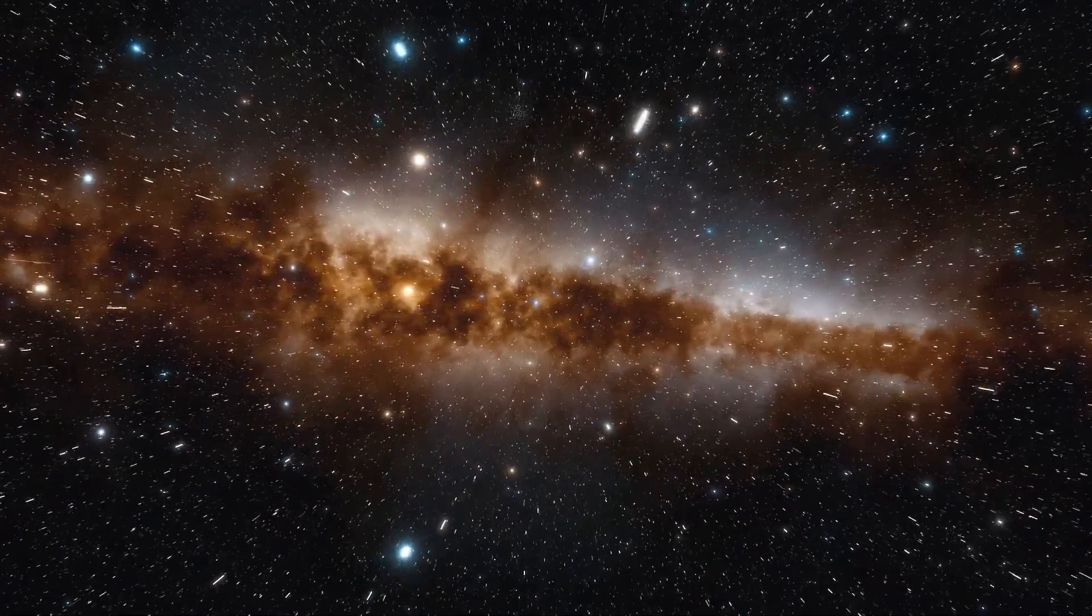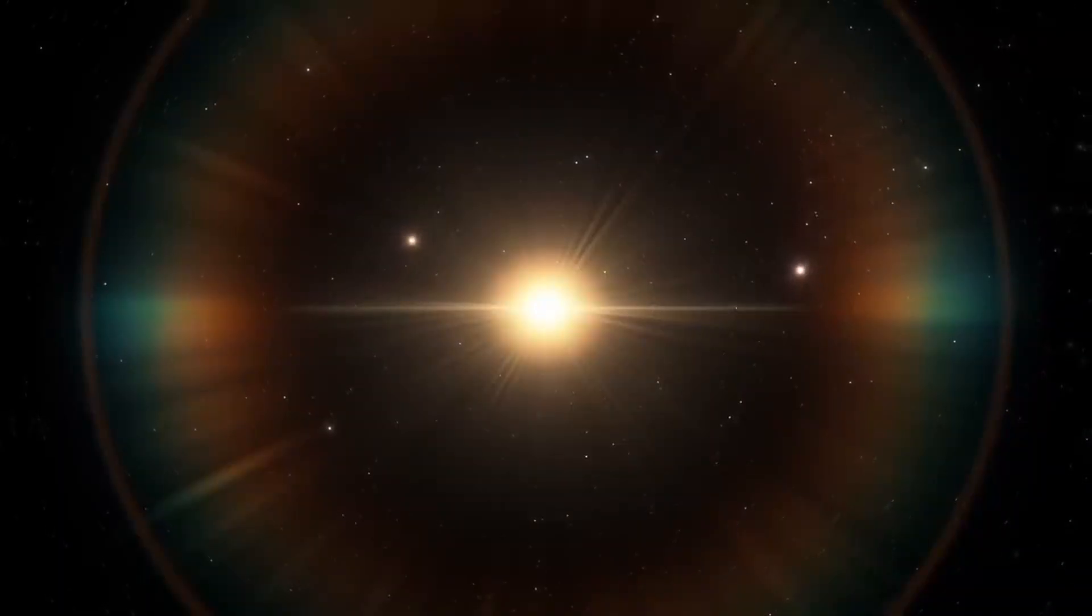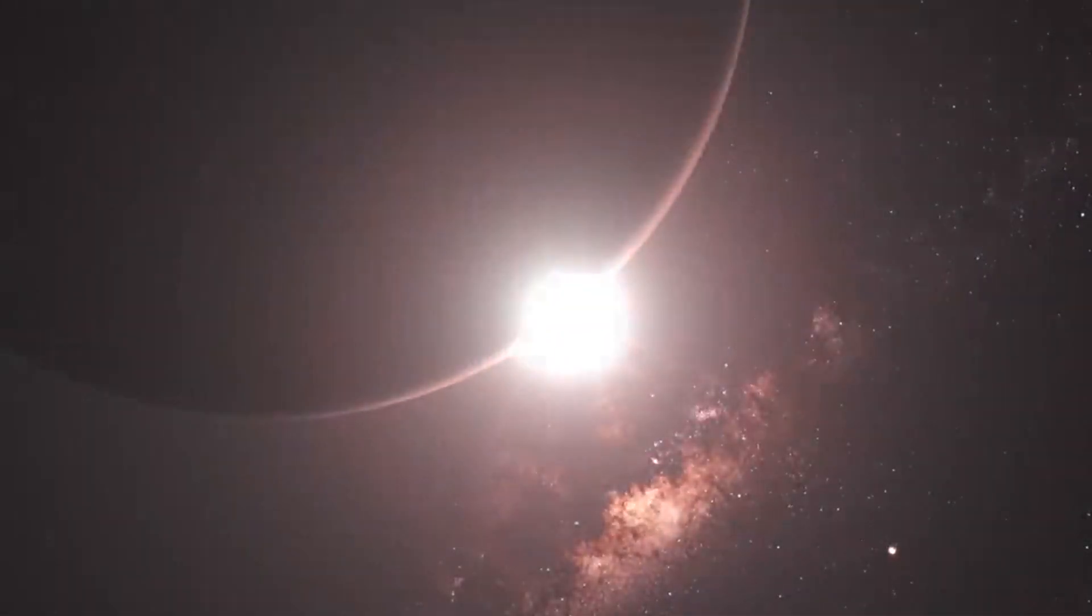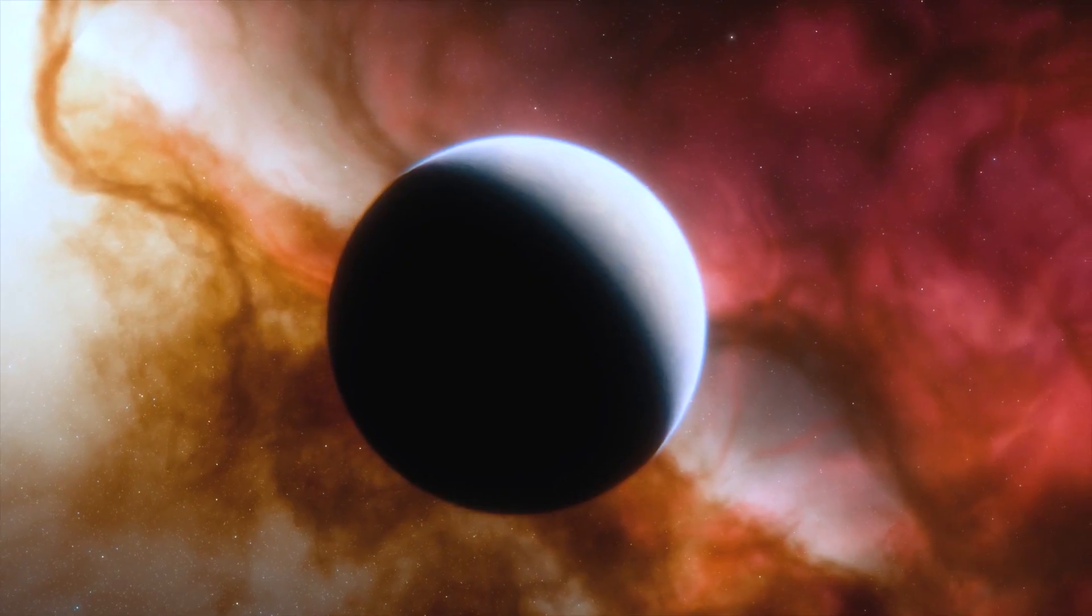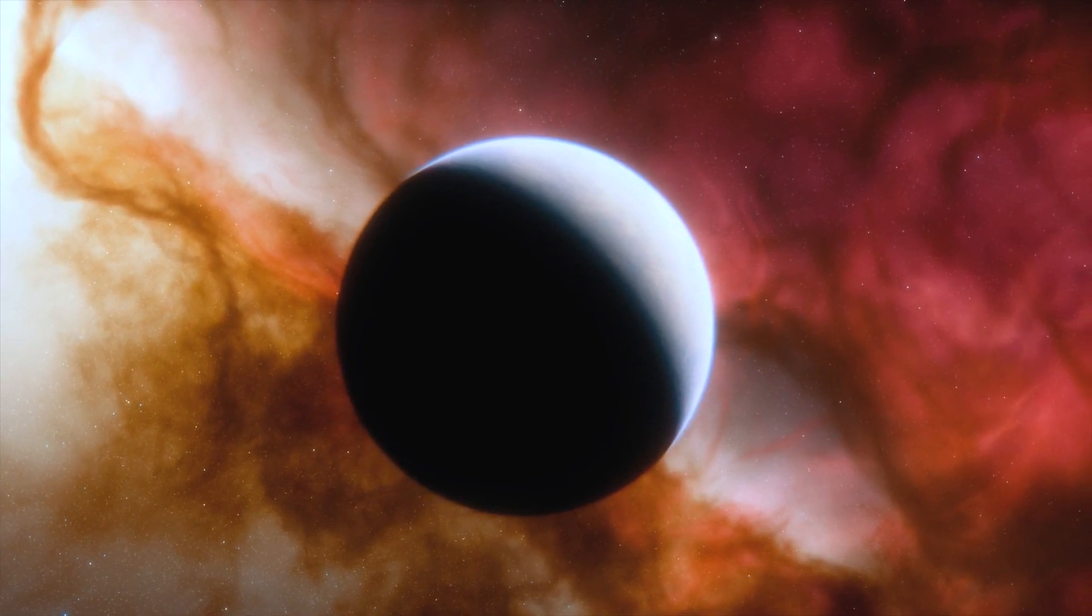K2-18b, a celestial entity unveiled by NASA's Kepler Space Telescope in 2015, emerged through the subtle dimming of its host star as it gracefully traversed its orbit.